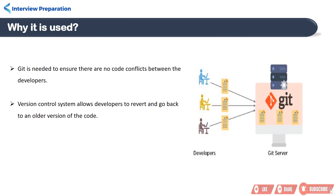Additionally, the requirements in such projects change often, so a version control system allows developers to revert and go back to an older version of the code. That's how Git is used to manage source code in software development.